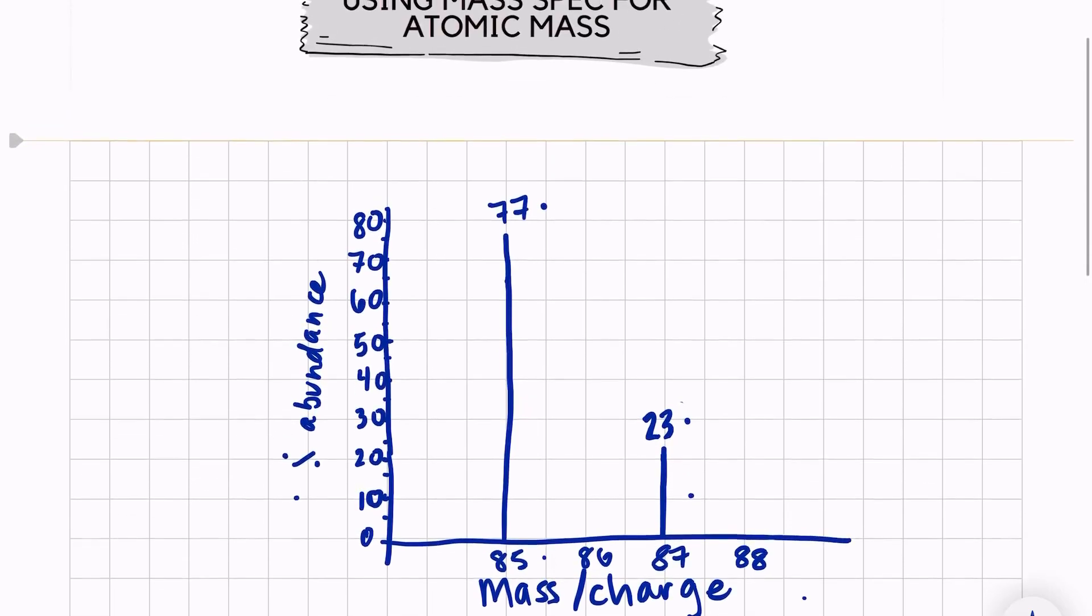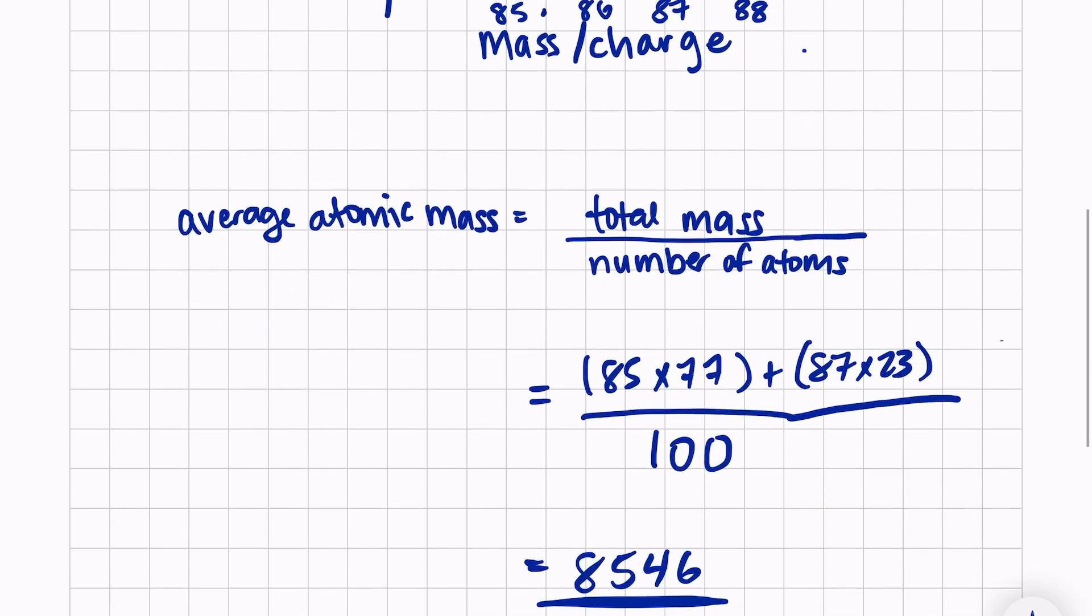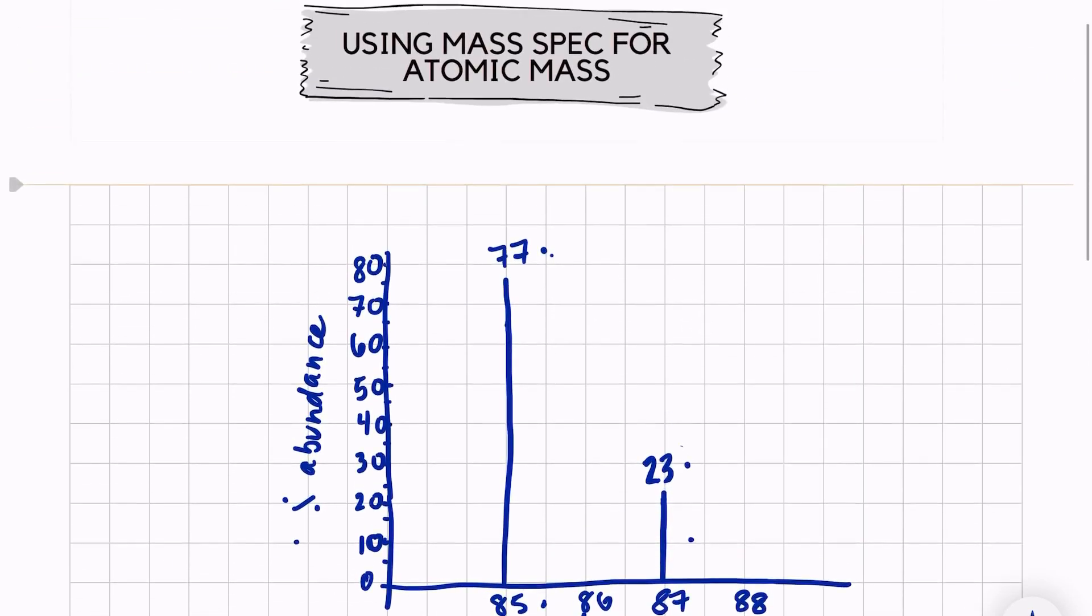So using mass spec data is really easy. We're just looking at the peaks, multiplying the mass by the percentage, and dividing by 100 to get our average mass. I hope this was helpful and it makes you confident in reading mass spec data, especially for solving for atomic mass. Thank you so much for stopping by.